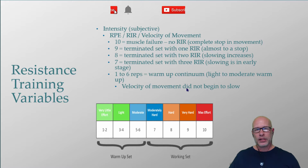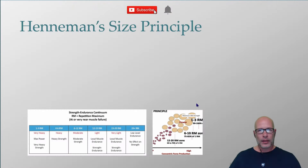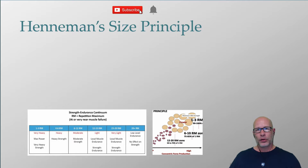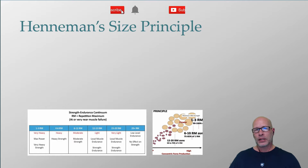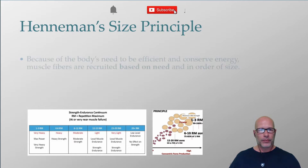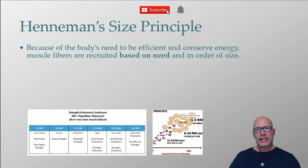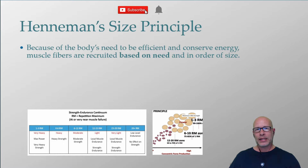The last concept I want to explain is the Henneman Size Principle, which I'll explain in more detail in a future video, but I want to include it here because it closely relates to the last concept I just explained. Because of the body's amazing need to be efficient and conserve energy, the brain recruits only the exact amount of muscle fibers needed to perform a task — and not one fiber more.